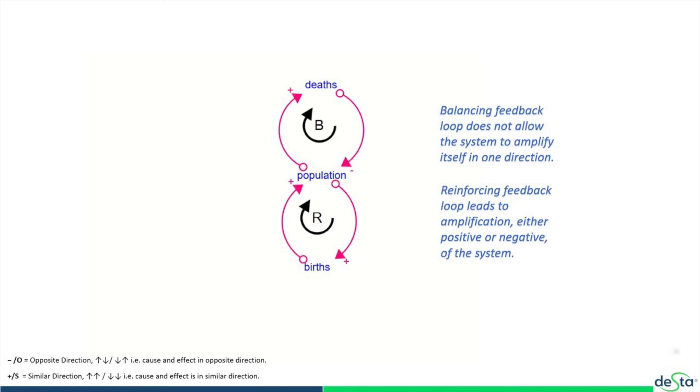So these are the two types of feedback loops that we use in systems thinking, and most of the models you see are built around the balancing and reinforcing feedback loops.